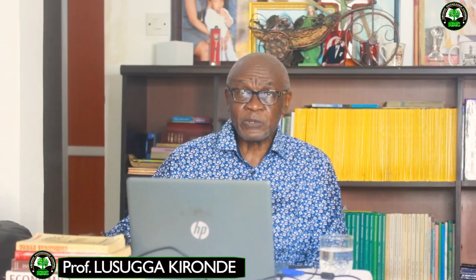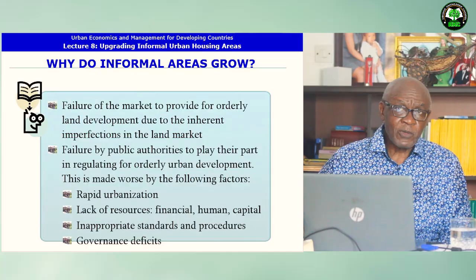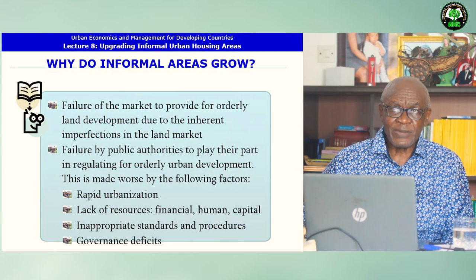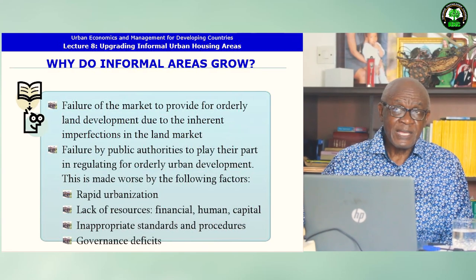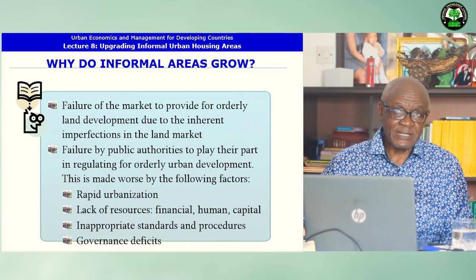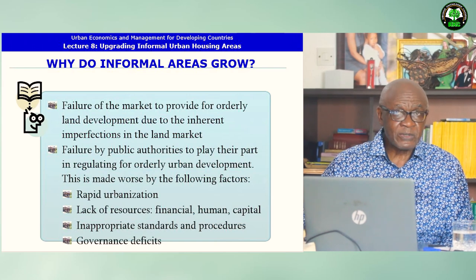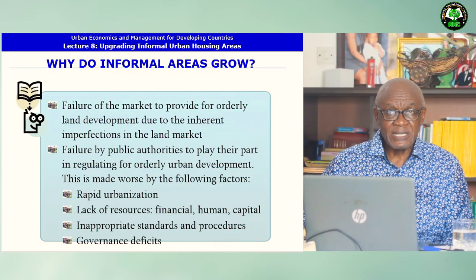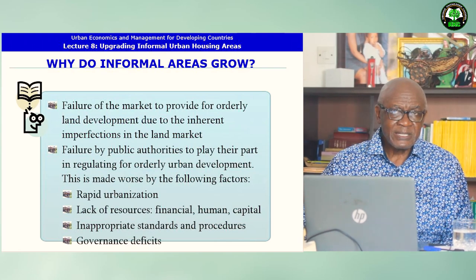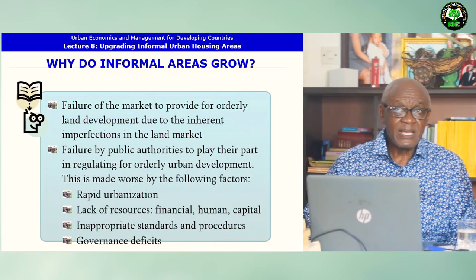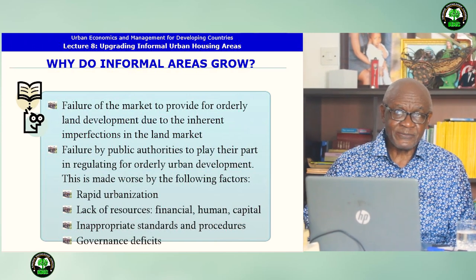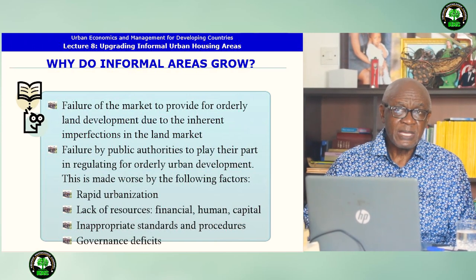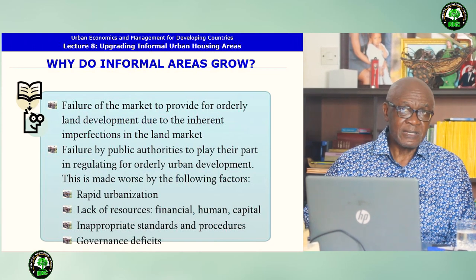Why do informal areas keep on growing? They grow because of the failure of the market to provide for orderly land development due to the inherent imperfections in the land market. But also they grow due to the failure of public authorities to play their part in catering for orderly urban development. This is made worse by the following factors: rapid urbanization, lack of resources — especially financial, human and capital — inappropriate standards and procedures, and governance deficits.